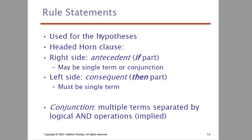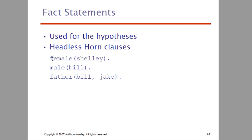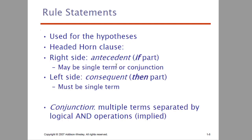This is rules. Rules are supposed to follow a hypothesis. We have a right side and a left side — for example, female of Shelly, father of Bill and Jake. On the right side, we have the antecedent — the if part — we have a single term or a combination of terms, that is a conjunction. On the left side, we have the consequent — that is the then part. If our condition is satisfied, we can execute it. The conjunction is a logical AND operation.